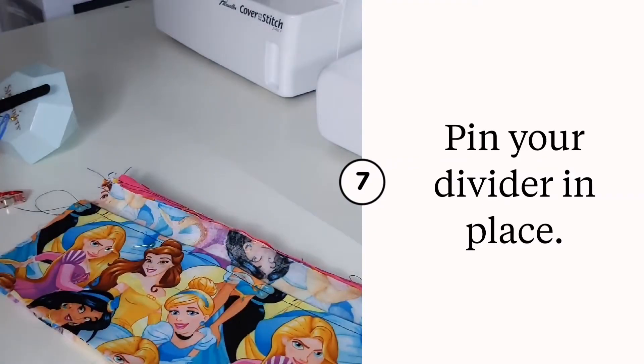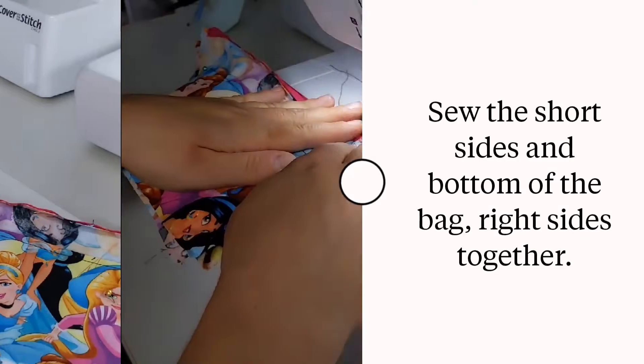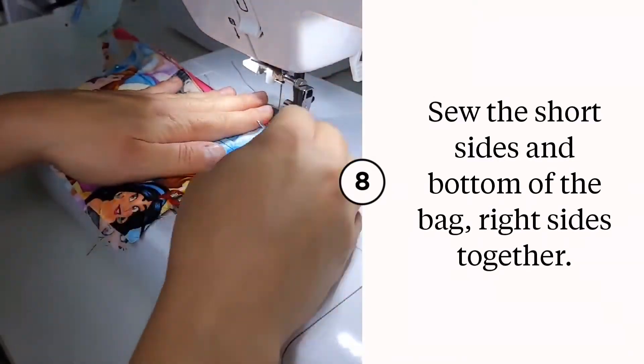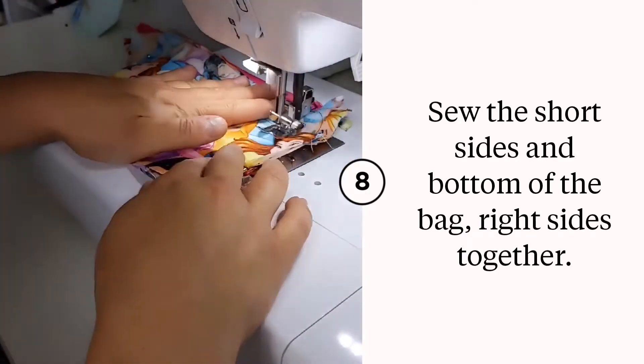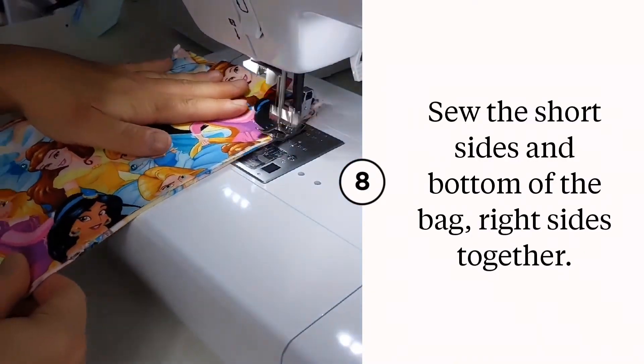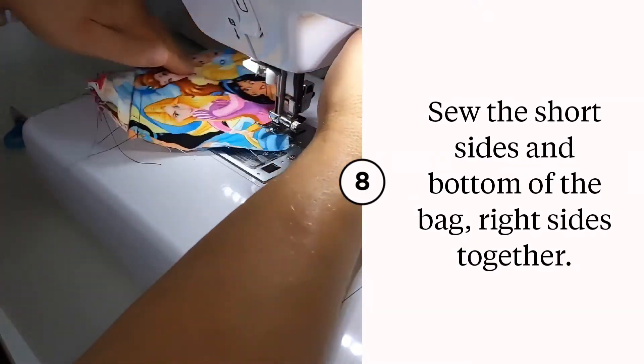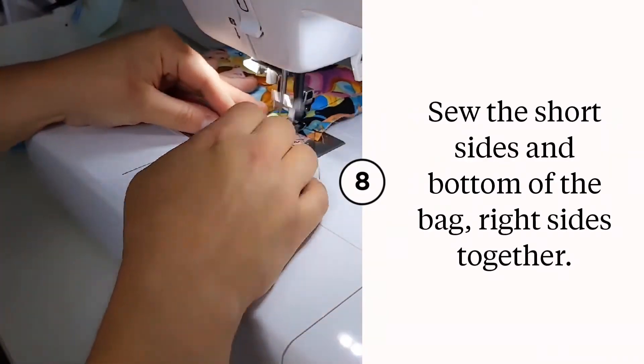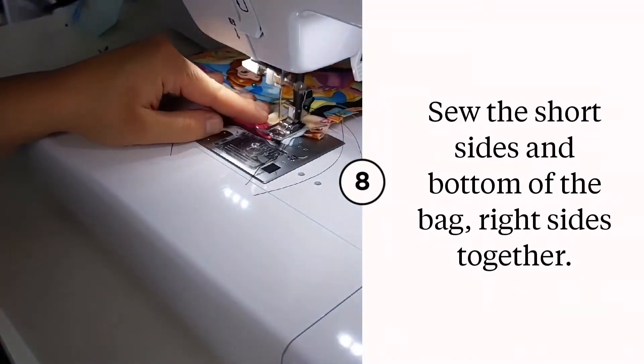Sew along each of your sides, making sure you're catching all of the layers including your divider. So you're sewing along the bottom and the two short sides. As you can see, I have a pretty large seam allowance here, which was because I did 10 inches and only a 9-inch zipper.